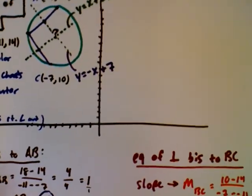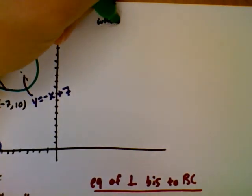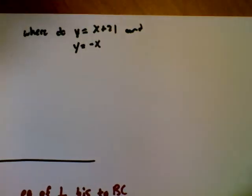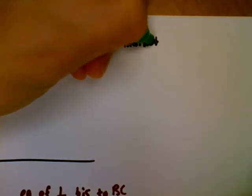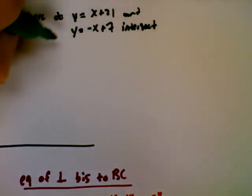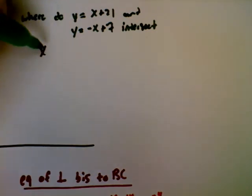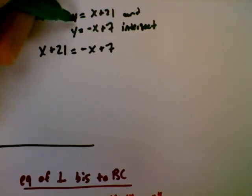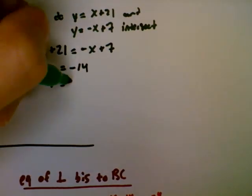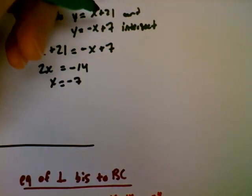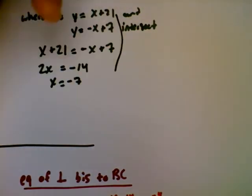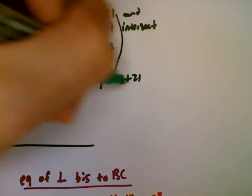Next, I need to solve this system of equations to find where the two lines intersect. I'll use substitution and set them equal: x plus 21 equals negative x plus 7. Adding x to both sides gives 2x, and subtracting 21 gives negative 14, so x equals negative 7. Substituting into y equals x plus 21: y equals negative 7 plus 21, which means y equals 14.